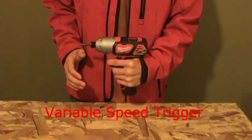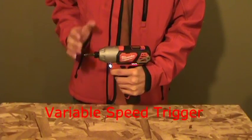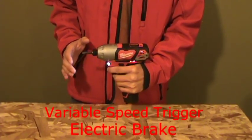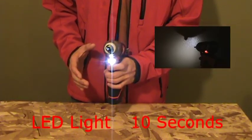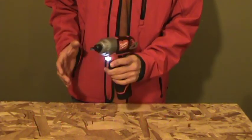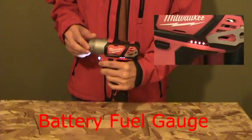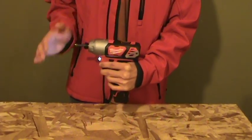It has a variable speed trigger, an electric brake. It has an LED light above the trigger which helps when working in low light conditions. The light will stay on for 10 seconds after you release the trigger. It also has a built in fuel gauge to show you the remaining battery life.